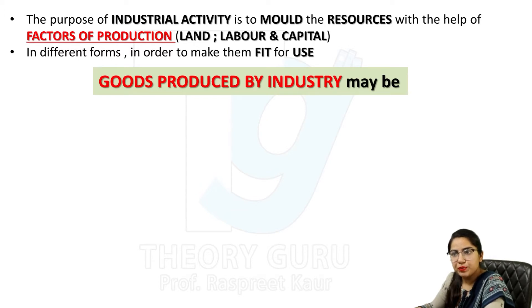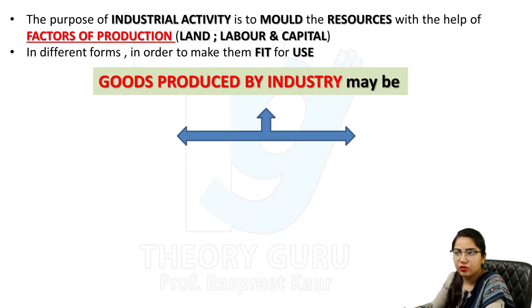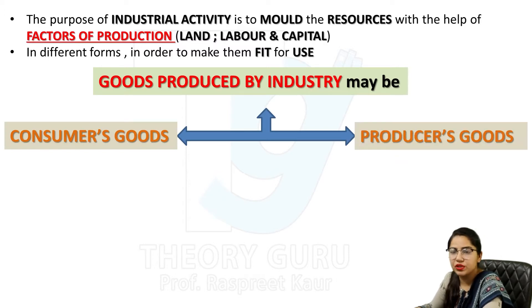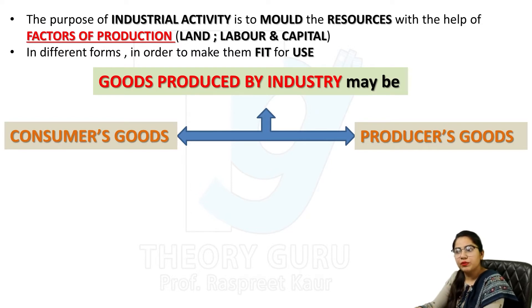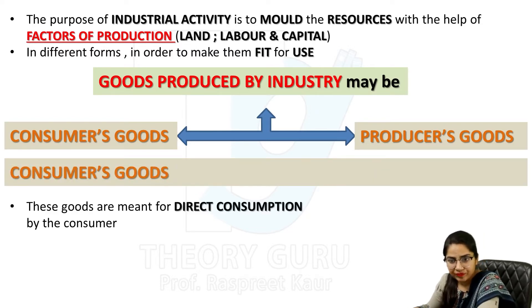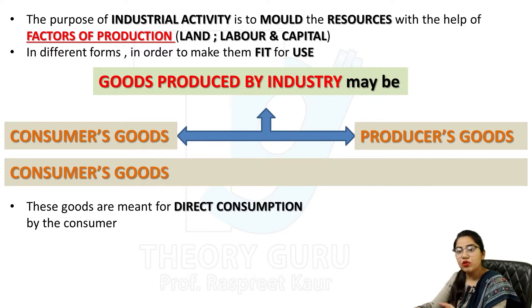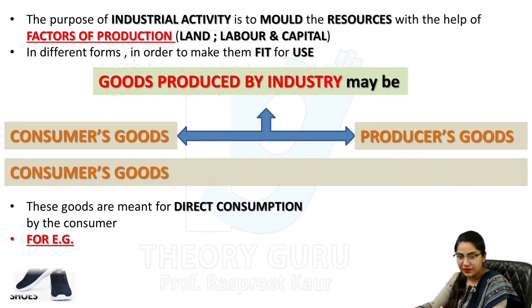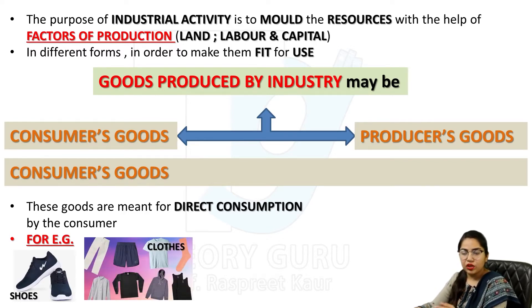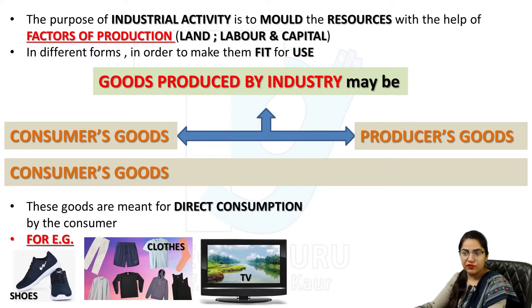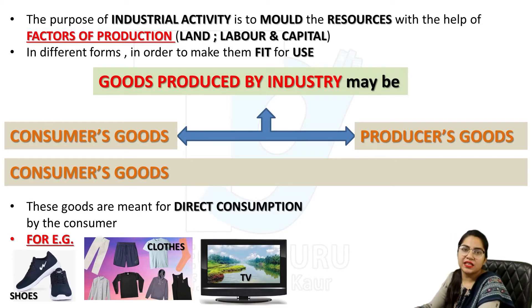The goods produced by industry are of two types: consumer goods or producer goods. Consumer goods are meant for direct consumption by the consumer — when the product is made, we can directly consume them. For example, shoes, clothes, and television — these are goods which are meant for direct consumption by the users. We call it consumer goods.